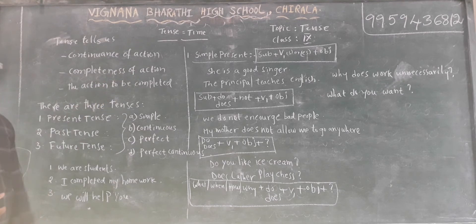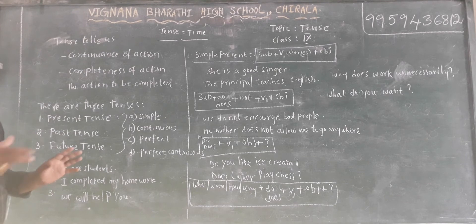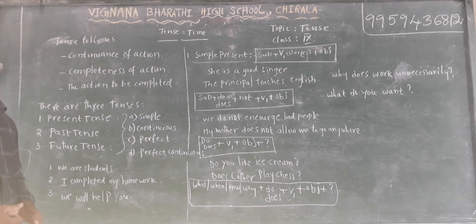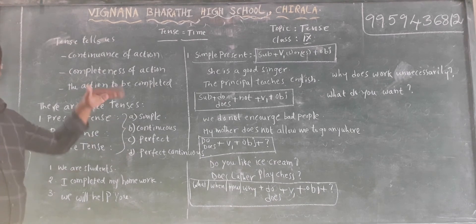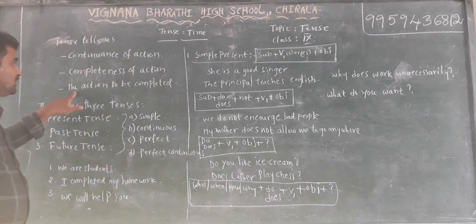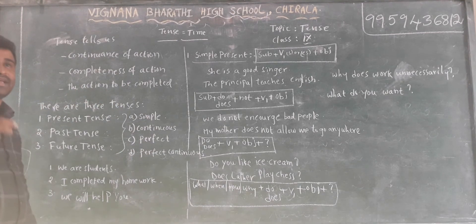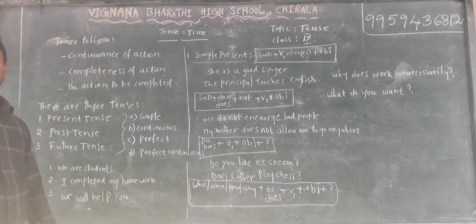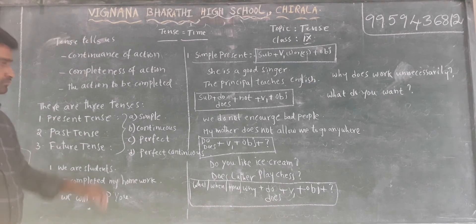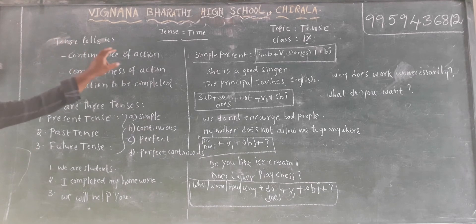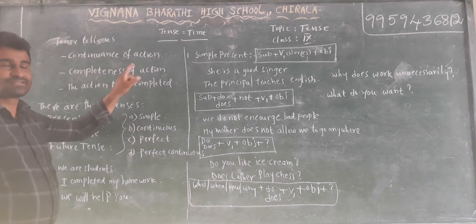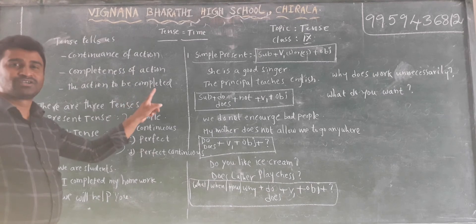Second, completeness of action — action which has already completed, or the action which completed earlier: yesterday, day before yesterday, or long back. And the third, the action to be completed — which means the action has not taken place and it is going to start or will start in the future. So tense tells us about the continuous of action, completeness of action, and the action to be completed.